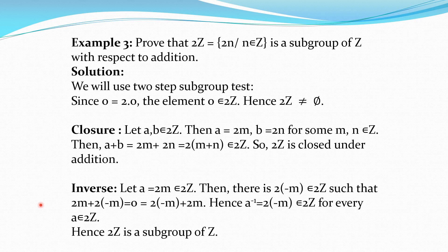The next property is inverse. Consider an element a = 2m in 2Z. We need to find which element added to a gives the identity 0. Now 2m + 2(-m) = 2(m + (-m)) = 2·0 = 0. And 2(-m) is an element of 2Z since -m is an integer. So the inverse of a = 2m is 2(-m). Thus every element of 2Z has an inverse. Hence 2Z is a subgroup of Z.